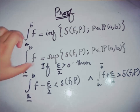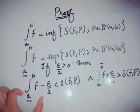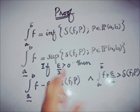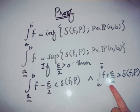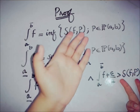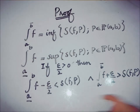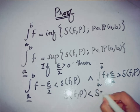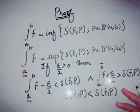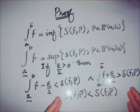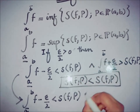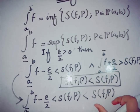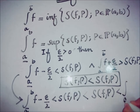So the supremum minus this positive number is less than any number within the set, and the infimum plus a positive number is greater than some element from the set. Now we use the fact that for every partition, the lower Riemann sum is always less than or equal to the upper Riemann sum. Using this relation, we join these two terms: the lower Riemann sum is less than the upper Riemann sum, which is less than the upper Riemann integral.